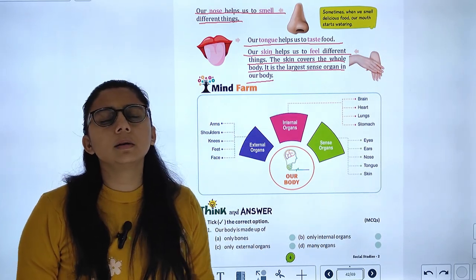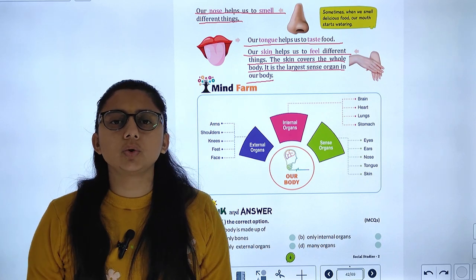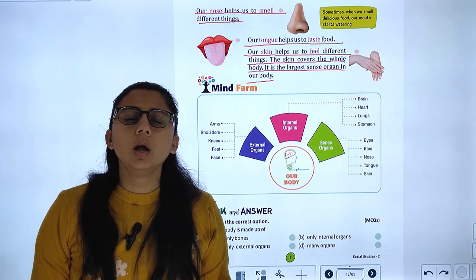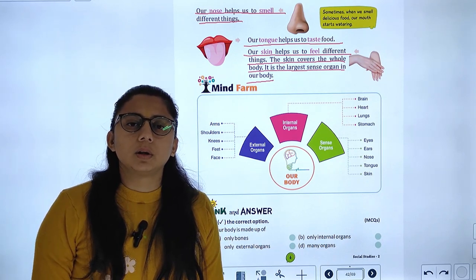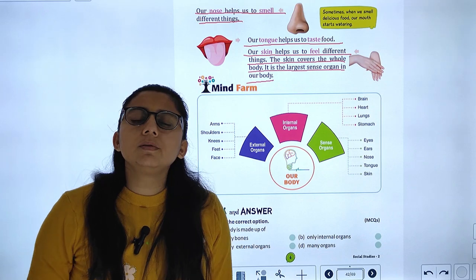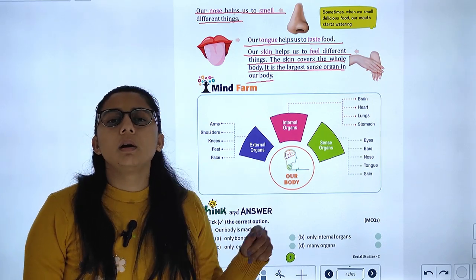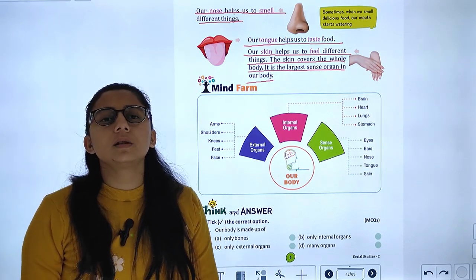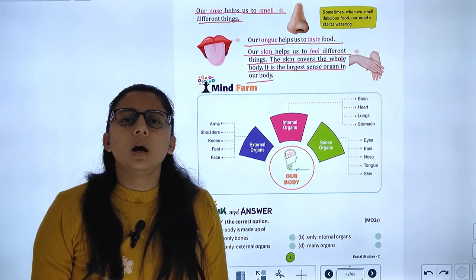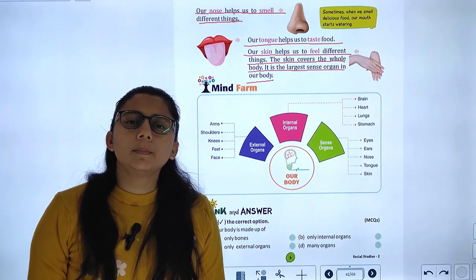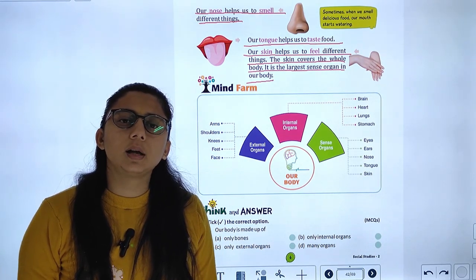The skin covers the whole body. Our largest sense organ is the skin. In this chapter we have studied about external organs, internal organs, and sense organs. I hope you have understood all the topics. That's all for today. Thank you.